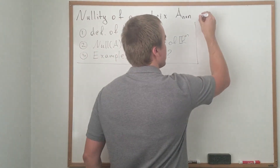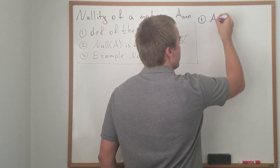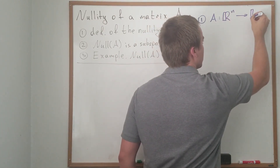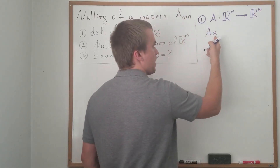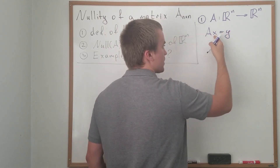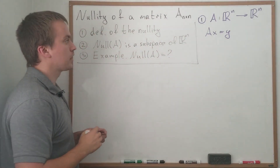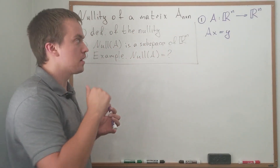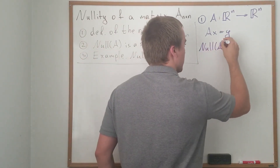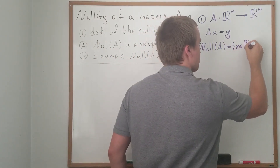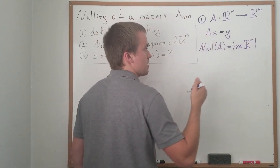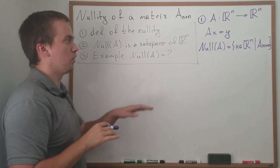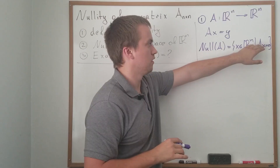Let's discuss the first step. We're given some matrix A, n by n, and we can think of this matrix as a mapping — a mapping such that we take some vector in Rⁿ and map it to another vector in Rⁿ. So we take an element X in Rⁿ and map it to vector Y by applying matrix A on the left-hand side. We have two choices: Y can be zero. The nullity of A — or in other words the kernel of A — consists of all elements X in Rⁿ such that when we apply matrix A to X we get the zero vector.